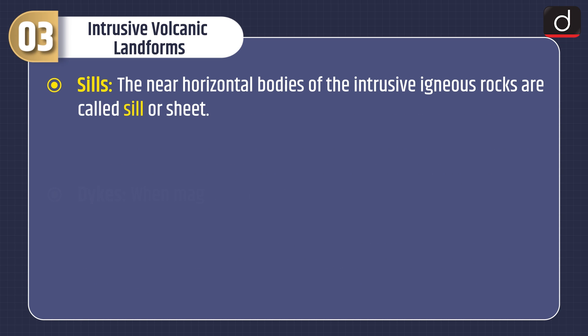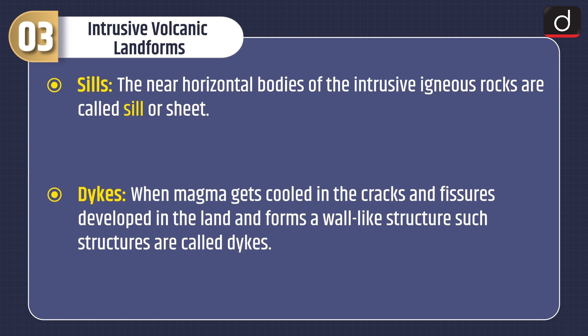Sills: the near-horizontal bodies of intrusive igneous rocks are called sills or sheets. Dykes: when magma gets cooled in the cracks and fissures developed in the land and forms a wall-like structure, such structures are called dykes.